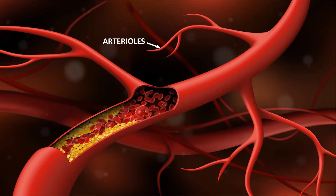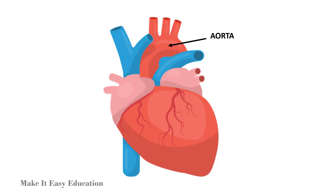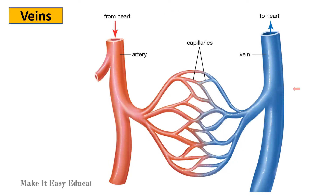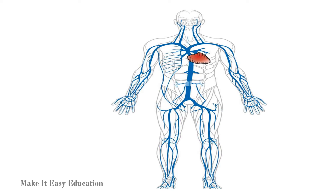Each artery gets divided into smaller arterioles to form a network throughout the body. The largest artery in our body is called the aorta — it is the main artery coming out of the heart. Another important artery is the carotid artery, which carries blood from the heart to the brain.